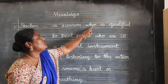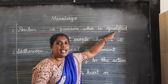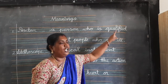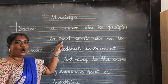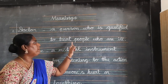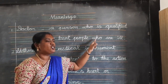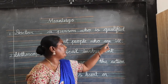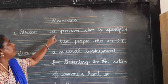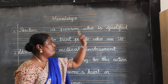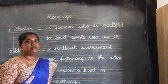A person — P-E-R-S-O-N — who — W-H-O — is — I-S — qualified — Q-U-A-L-I-F-I-E-D — to — T-O — treat — T-R-E-A-T — people — P-E-O-P-L-E — who are ill — I-L-L. Doctor: a person who is qualified to treat people who are ill.